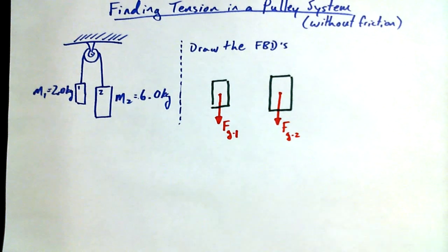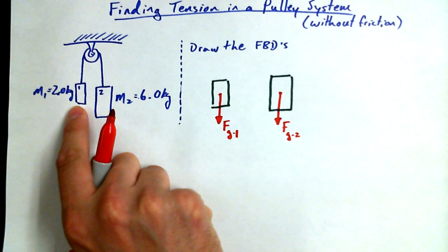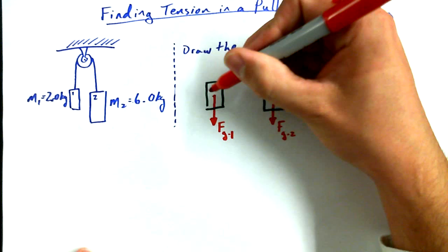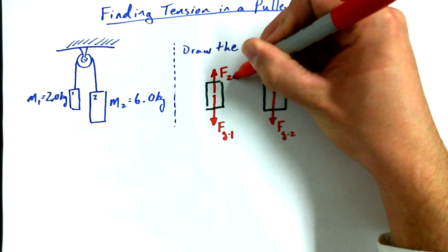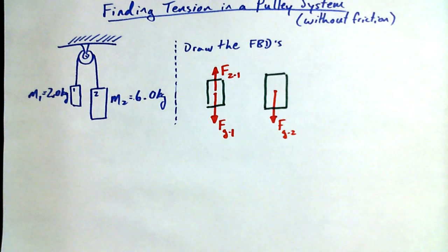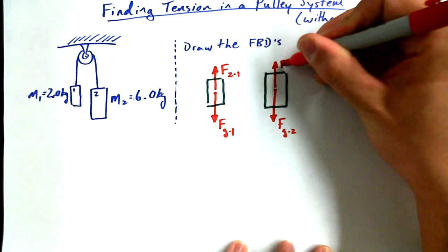What's a force acting up on mass one? Force of two on one, that's a great guess. If there's a force of two acting on one, what might be acting up on mass two? Force of one on two, action reaction force pairs.